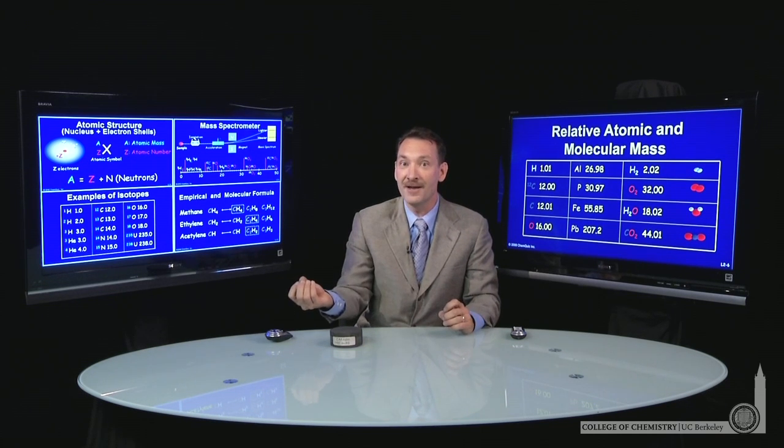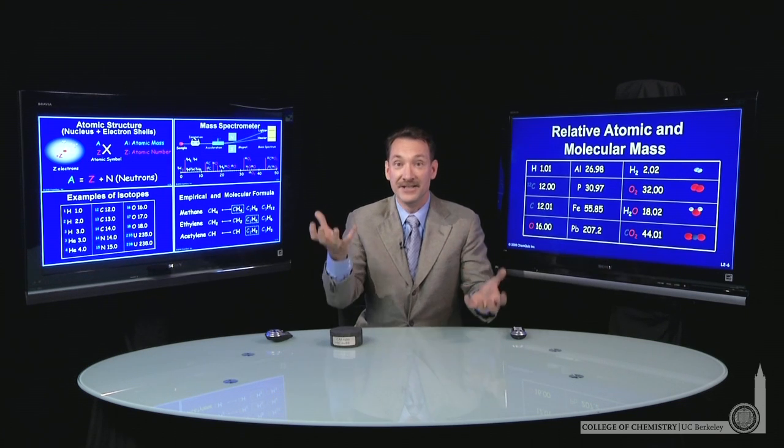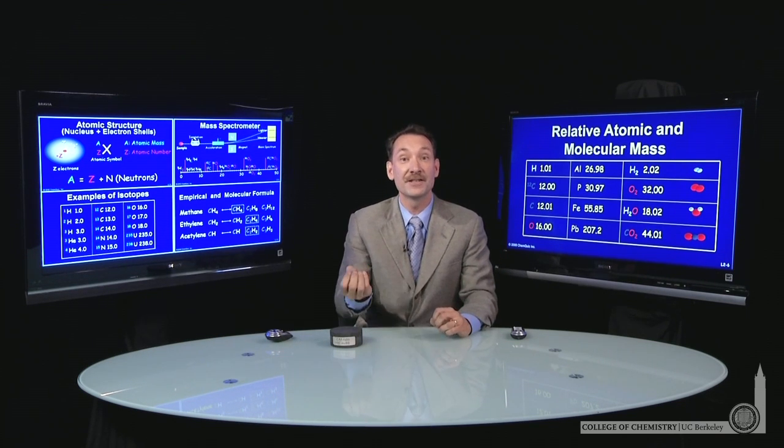The uranium-235 is the fissile nucleus. It's used in nuclear reactors. So we have different properties of the nuclei that are different isotopes.